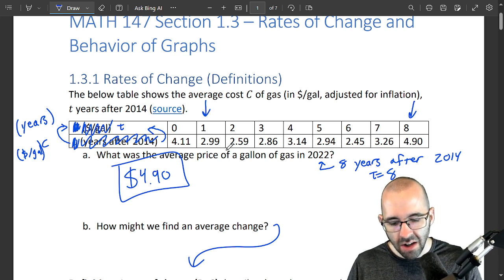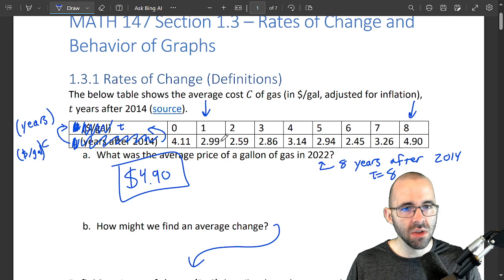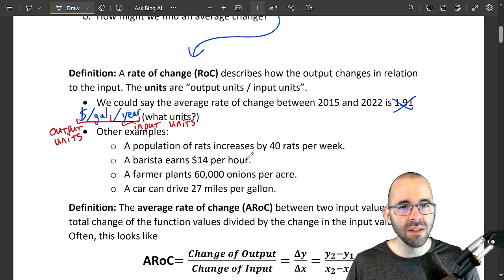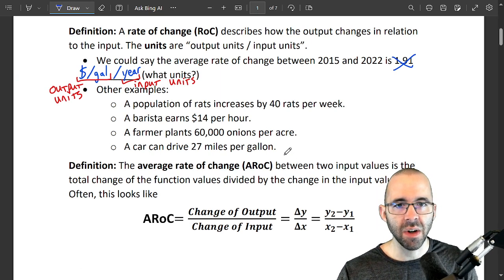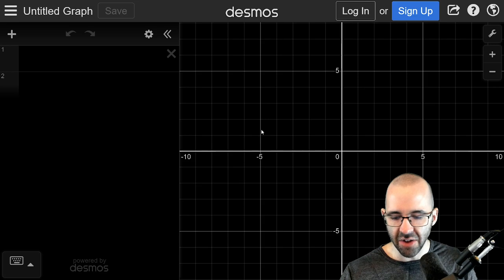So a dollar and 91 cents was the total change between these two years, but we'll get into the formula later. It actually should be a dollar and 91 divided by seven, because seven years went past.